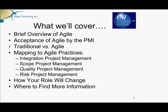We'll look at the differences between a traditional approach and an Agile approach. Then we'll spend some time mapping key knowledge areas — integration, scope, quality, and risk — to what you would do in Agile practices. This section of the presentation includes lots of pictures so you can see the type of tools we might use, what an iteration planning meeting looks like, and what a schedule looks like in Agile. I wanted you to have some visual cues to help solidify this new Agile material. Then we'll talk about how your role will change, and finally we'll finish with where to find more information.